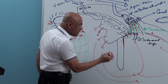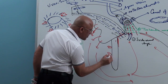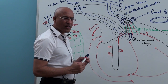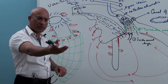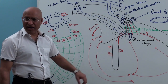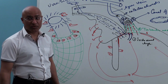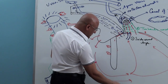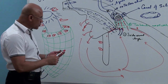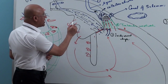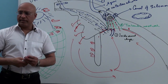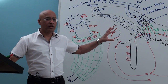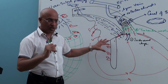Around the canal of Schlemm, there is a special type of gel called the juxtacanalicular gel or interstitium. This interstitium is also very rich in these phagocytic cells. Even the epithelium of the iris — present on the back of the iris — also has some phagocytic cells.